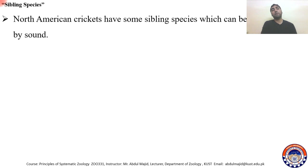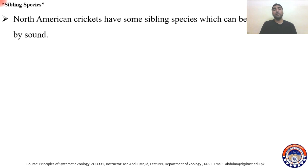North American crickets have some sibling species which can be differentiated by sound. Sometimes you find crickets living in the same habitat that look identical — you cannot differentiate them morphologically. To differentiate these sibling species, you record their mating calls or chirping and then analyze the recordings for differences.